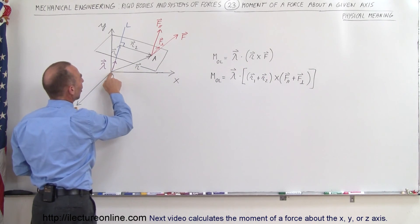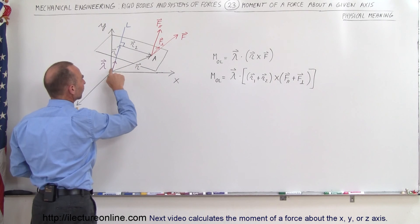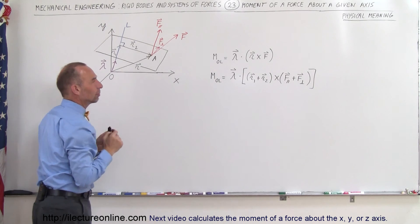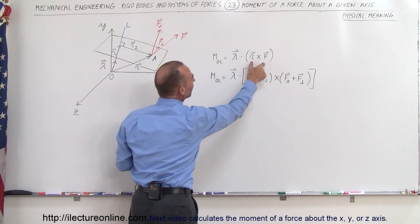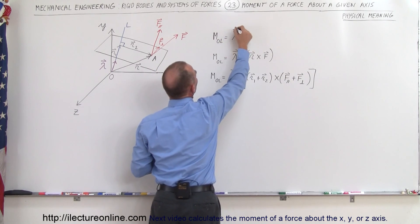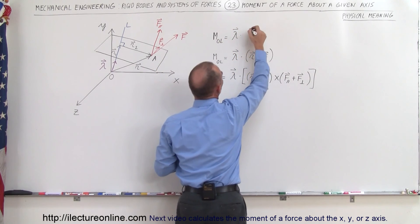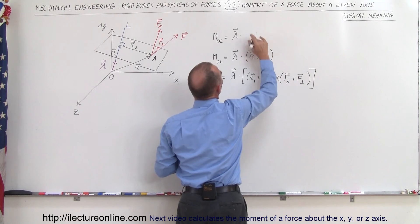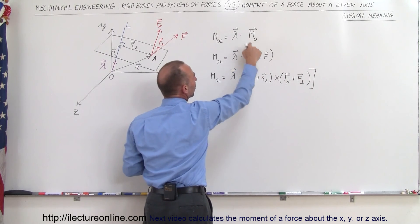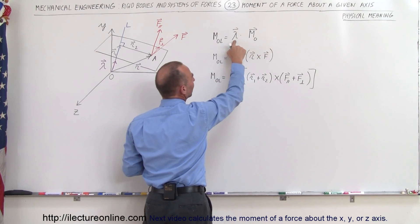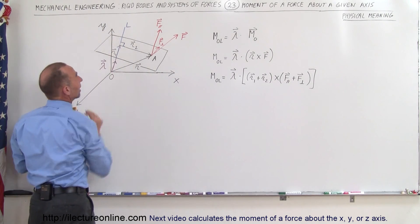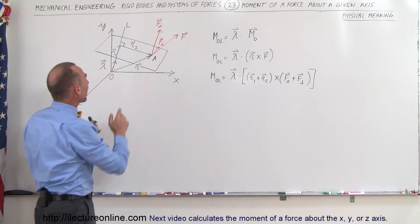Now remember that R is the position vector from the origin to the point at which the force acts, and F is the force acting at that particular position. So M_O is equal to the unit vector dotted with R cross F, which means this is equal to the moment vector about the origin. If you multiply that times the unit vector along the direction of the axis of interest, you will get the moment about the line OL.